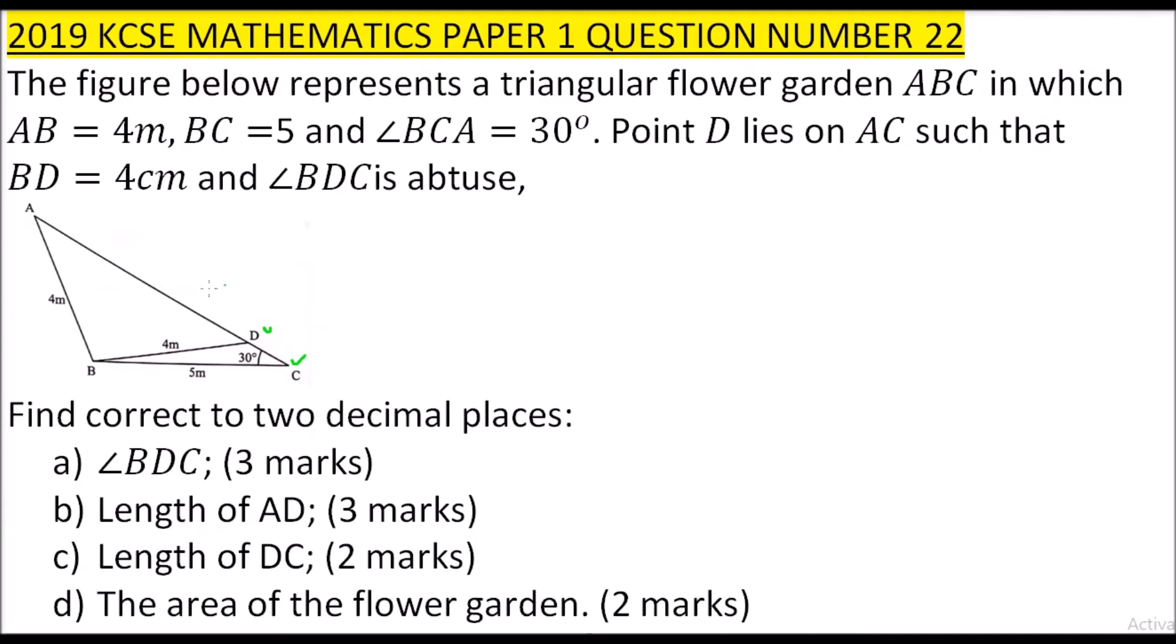Angle BDC is the angle that we are interested in. Because we have been given the side BC which is 5 centimeters, and BD which is 4 centimeters, and the angle at C, we can use the sine rule and say 4 divided by the sine of the opposite angle of that side is 30 degrees, equals 5 divided by the sine of angle D. When you rearrange this, you find that sin D equals 5 times sin 30 divided by 4, and you get this is equal to 0.6250.